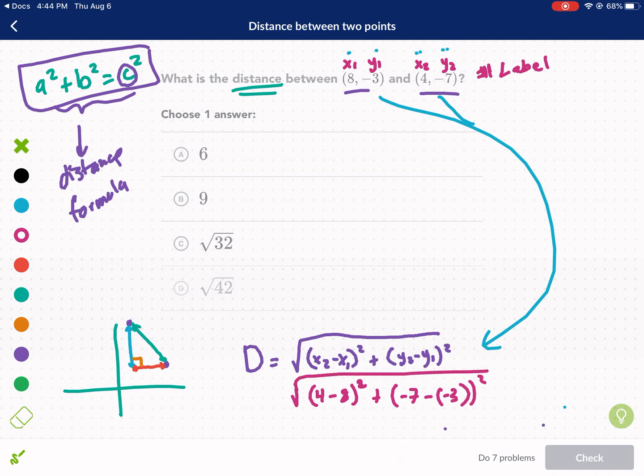So, I'm going to have 4 minus 8 is -4. Again, it's not super important that it's negative because you're going to square this anyway, but I just want to show you and be precise here. Then I have -7 minus -3. That's the same thing as -7 plus 3, which gives me -4. Again, it's not important that it's negative because we're going to square it anyway.